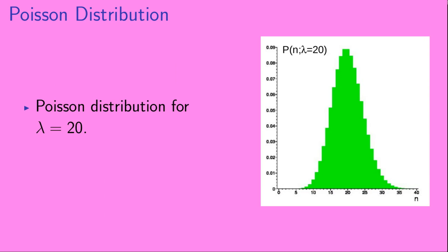Here we show the Poisson distribution for lambda equal to 20. In a given one-minute interval, you expect on average to see 20 radioactive decays. However, as we can see from the plot, the probability that you'll see exactly 20 decays is about 0.09, and the probability that you'll see, say, 15 decays is about 0.05.